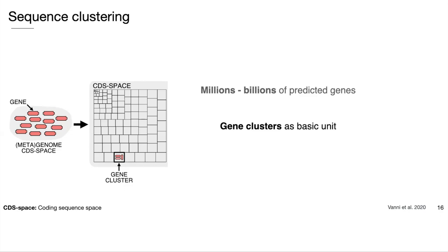Gene clusters are a great practical solution because they bring together genomes and metagenomes, work for both knowns and unknowns, help reduce dataset redundancy which speeds up downstream analysis, and form informative units grouping together evolutionarily related genes. However, because of the big numbers we were dealing with, our first clustering attempt using CD-HIT took three months to cluster 400 million predicted genes down to 30% sequence similarity.